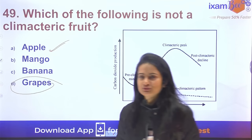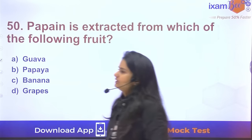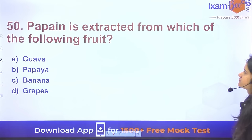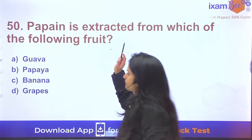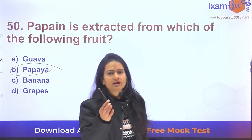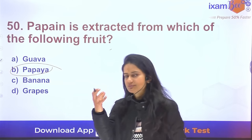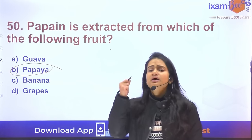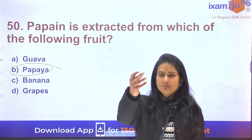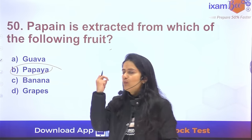Question 50: Papain is extracted from papaya — specifically from the latex of the papaya fruit. The dried latex from papaya is the source of papain.